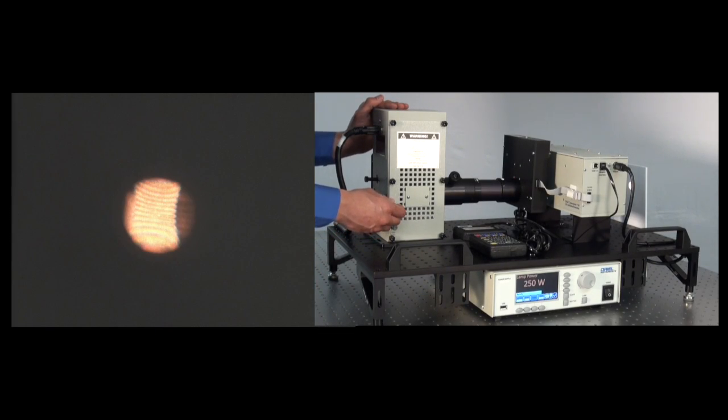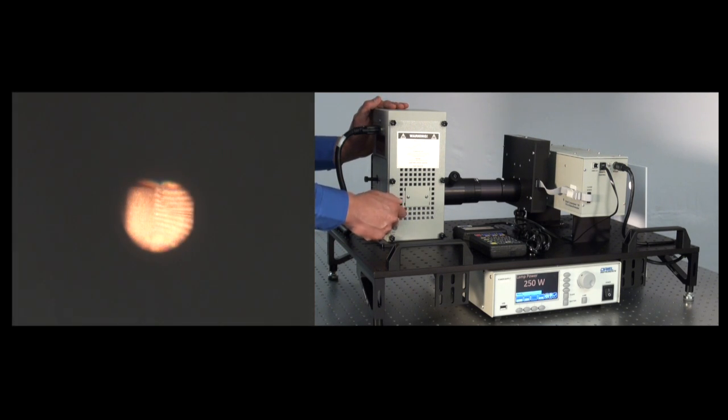we're going to center it onto the spot size output of the light source. So using these horizontal and vertical lamp adjustment knobs like we used before, we're just going to fix it. Just center that filament both horizontally and vertically into the spot size output of the light source.